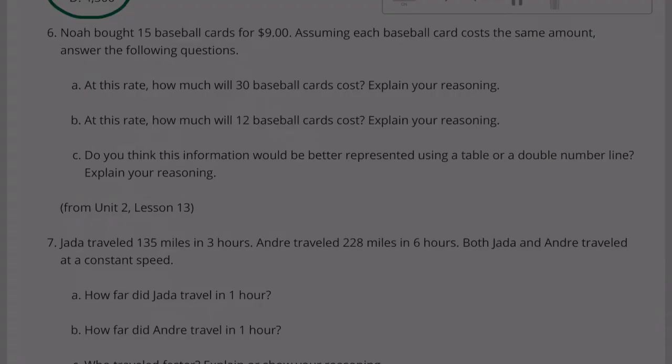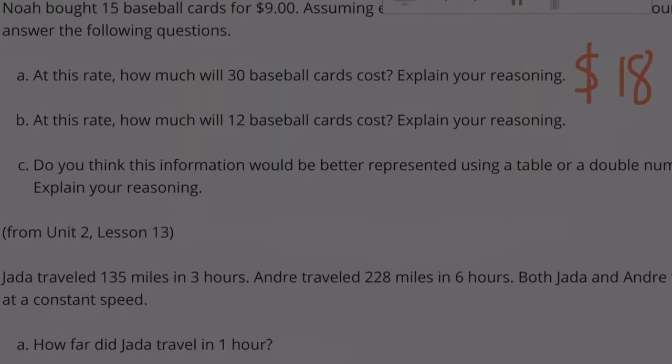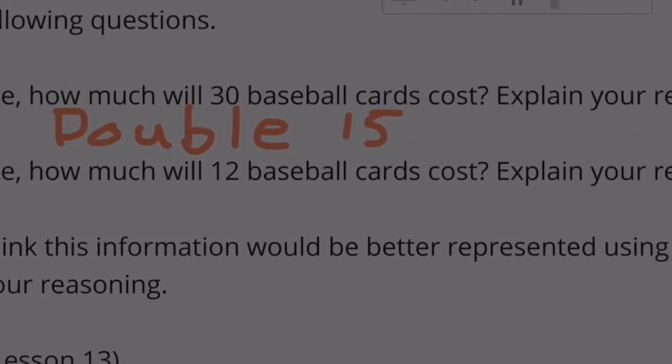Problem 6: Noah bought 15 baseball cards for $9. Assuming each baseball card costs the same amount, answer the following questions. Part A: At this rate, how much will 30 baseball cards cost? Well, 30 is twice as many as 15, so if I'm multiplying 15 by 2 to get 30, then I'd have to multiply 9 times 2, and that would give me 18. So I'm going to go with $18 for 30. And my reasoning would be double 15 cards, it's going to be double the cost of 15 cards.